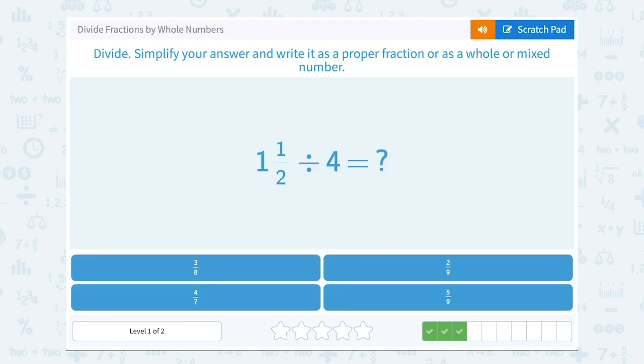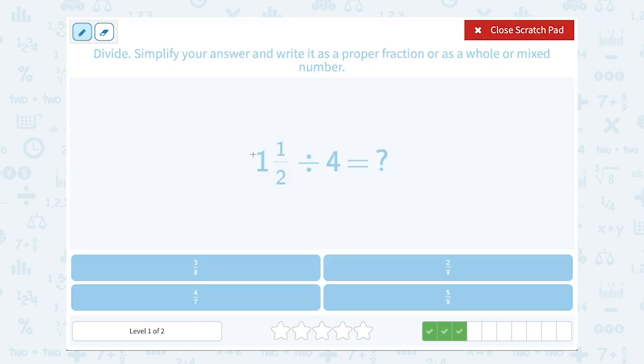1 and 1 half divided by 4. Well, 1 and 1 half, we want to make that an improper fraction. We actually just saw this one a moment ago. Remember, we said to do that, 1 times 2 is 2. So we can think of that as being 2 over 2. And then add the 1 extra. If the whole 1 is 2 over 2, add the 1 to make it 3 over 2.